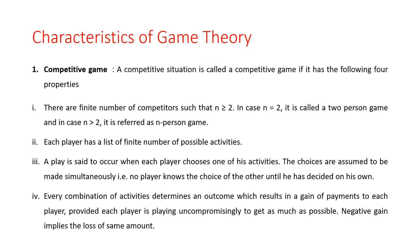If we have the case where n equals 2, it is called a two-person game problem. The second property is each player has a list of a finite number of possible activities. The third property is a play is said to occur when each player chooses one of his activities, and the choices are assumed to be made simultaneously — that is, no player knows the choice of the other until he has decided on his own.